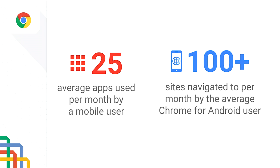We saw earlier that users spend a lot of time in very few native applications, but they visit many sites every month. URLs are the web's superpower, combined with a security model that puts users in control at every moment. The web reduces friction to use like no other platform in the world ever has. A surprisingly consistent theme from user studies about mobile is that users don't really feel comfortable installing a lot of applications.